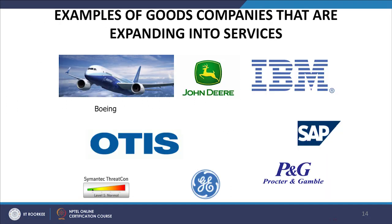Examples of goods companies expanding into services include Boeing, John Deere, IBM — which has moved from being a product company to a purely service company — as well as SAP, Otis, Symantec, GE, and Procter and Gamble. These are goods companies that are moving into services.